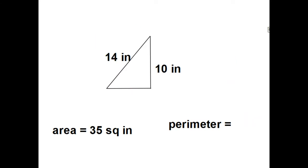You try out the next one. Half base times height equals 35 square inches this time. My height is 10. So I got half of base times 10. Half of 10 is 5. So 5 times the base equals 35. So the base must equal 7.